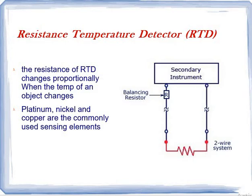Welcome back to the temperature measurements. Now we will see the Resistance Temperature Detector, which we are calling RTD. In this RTD measurement, there will be a secondary unit and a resistor, and this resistor is going to be connected to a two-wire system, and then we are going to measure that temperature.